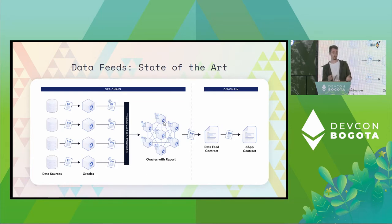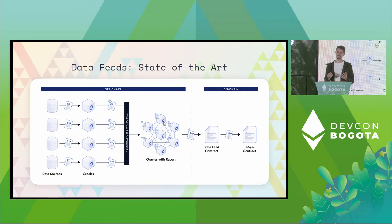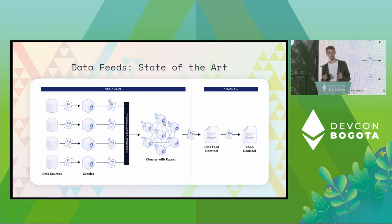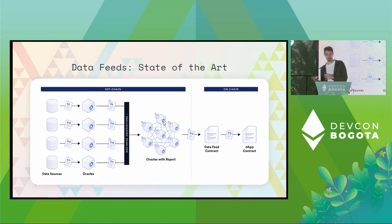Chainlink's version of this is called the off-chain reporting protocol. It's far more efficient than the predecessor — we realized something like 90% on-chain cost savings. This is good for security because it means that with the same security budget, we can have a lot more oracles, so we can tolerate more faulty oracles in the system.